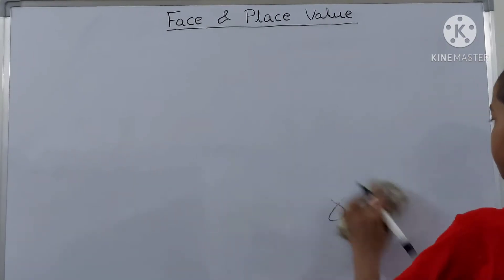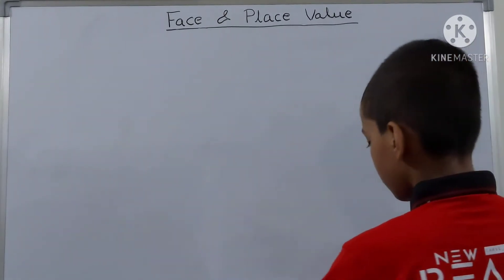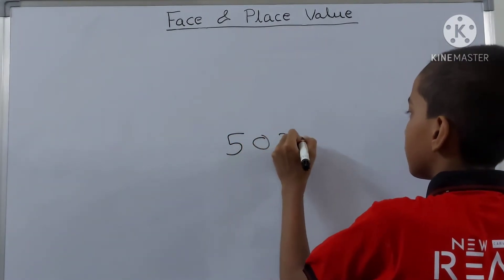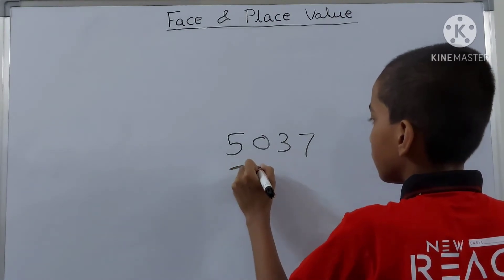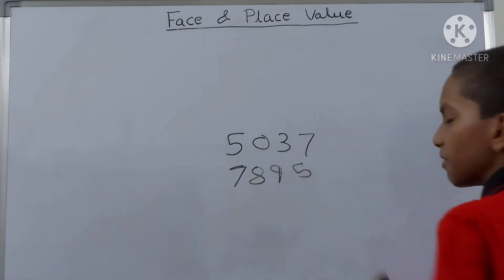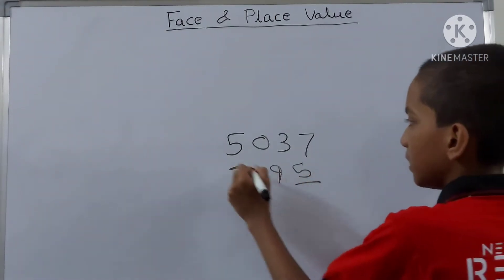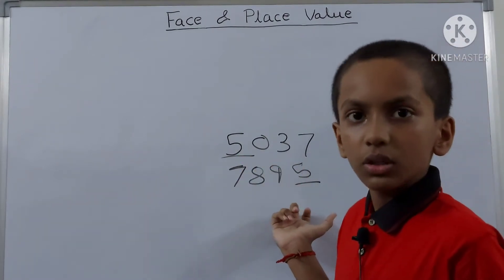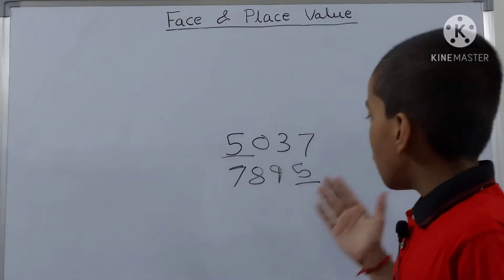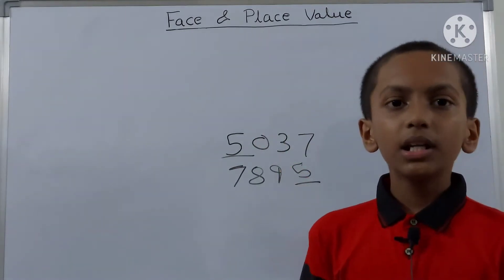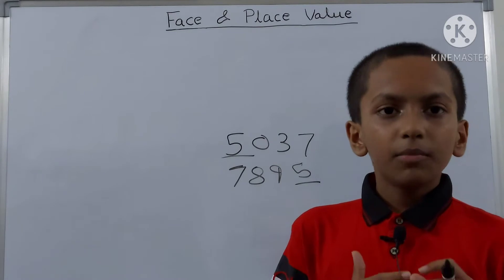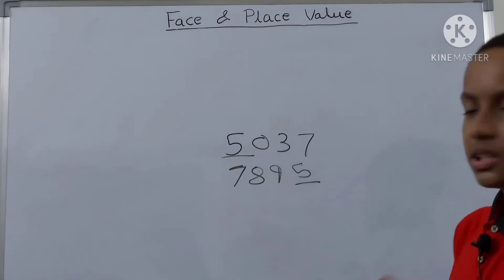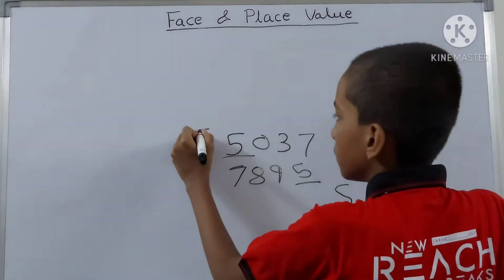Let's take one more example. Now we have our two numbers, and I ask you to find the face value of these 5s — this 5 and this 5. What will be the face value of this 5 and this 5? If there is any common digit, there is no change you have to make in the face value of that digit. That means the face value is 5 over here also.